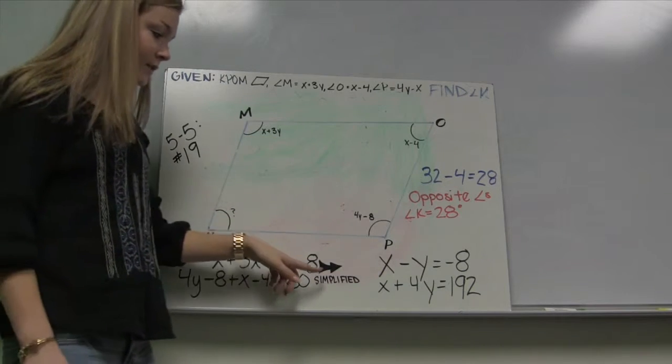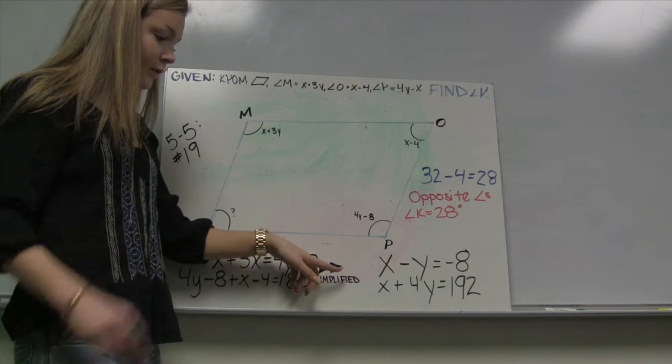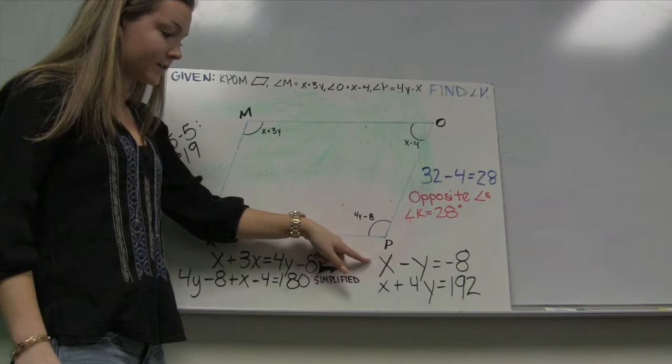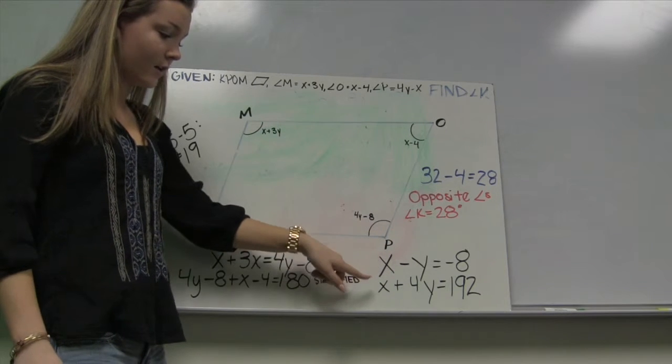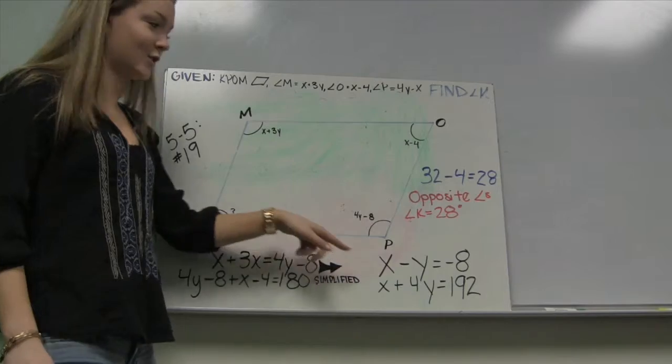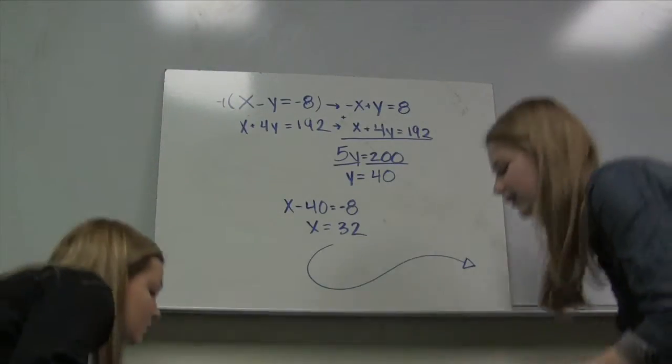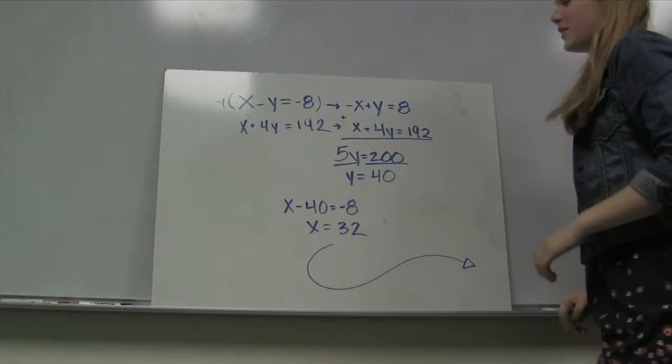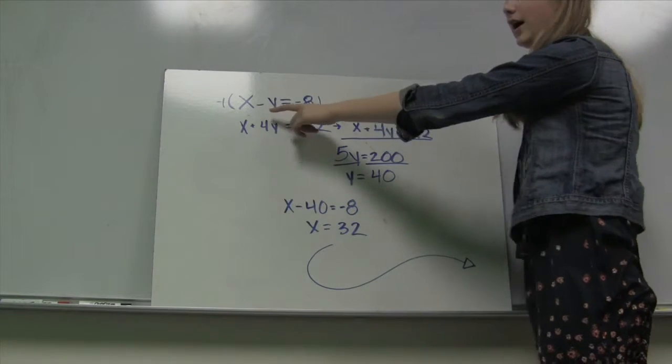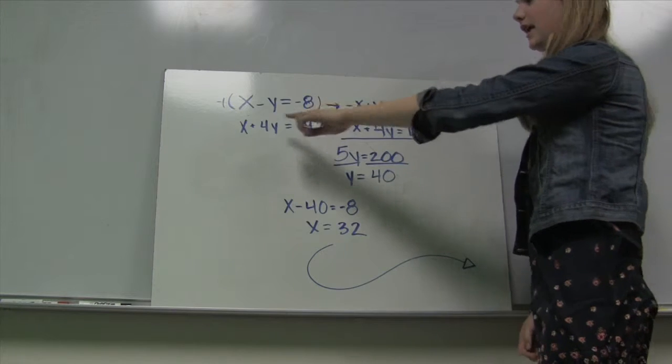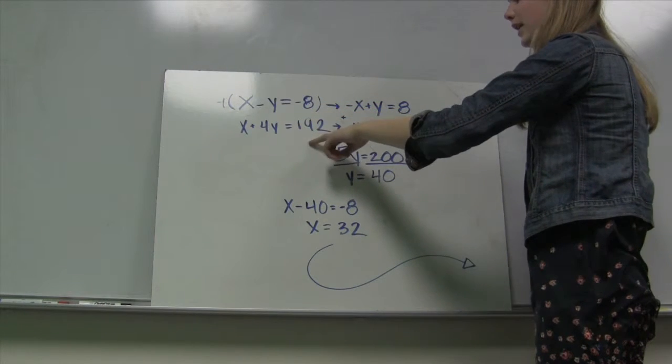We then simplified it so that we could find the value for one of the variables first. So we got x minus y equals negative 8 and x plus 4y equals 192. So once you have your simplified equations, x minus y equals negative 8 and x plus 4y equals 192, you have to use a system to solve for x or y.